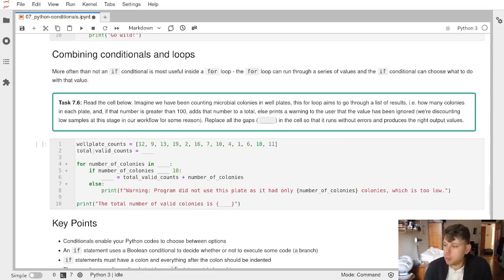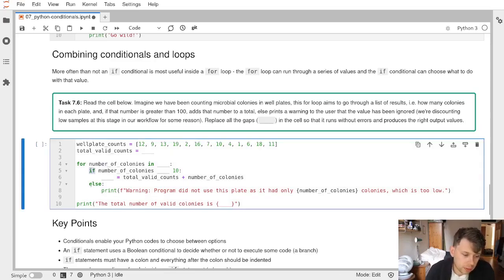In this exercise we're going to combine conditionals and loops. We have an if, an else, and a for loop, and we've got this little scenario where we've been counting bacterial colonies and plants, or if you're an ecologist maybe you're counting dandelions in quadrants.